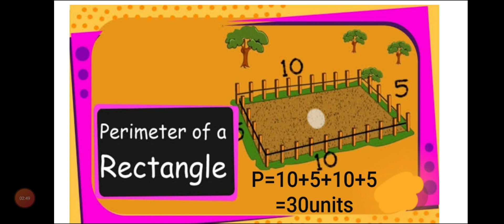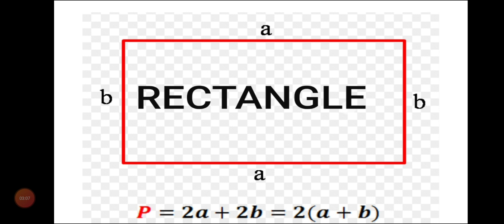I used the word 'units' because in the picture no specific unit like centimeters or meters is given. If no specific unit is given, we will use 'units' for the perimeter. From this, we can conclude that the perimeter of a rectangle has a formula because in a rectangle the opposite sides are equal. Two sides are equal to 'a' each and two sides are equal to 'b' each. Adding them gives a plus b plus a plus b, which is 2a plus 2b, equal to 2 times (a plus b). This is the formula for the perimeter of a rectangle — write it down in your notebook.